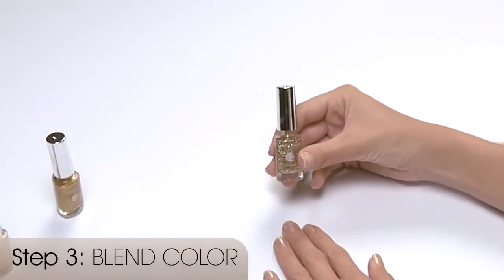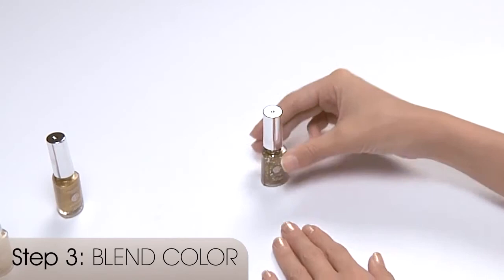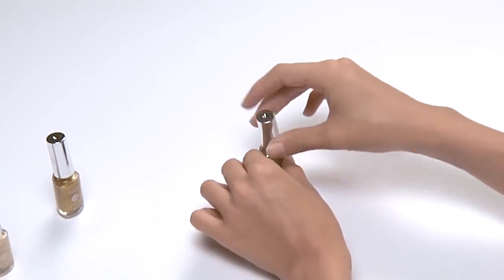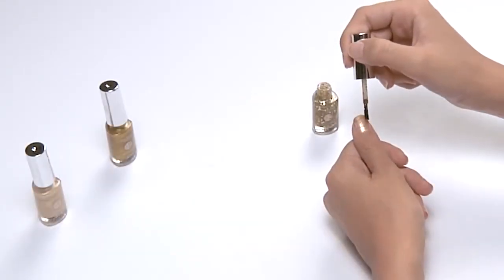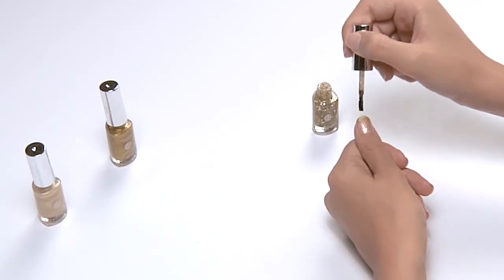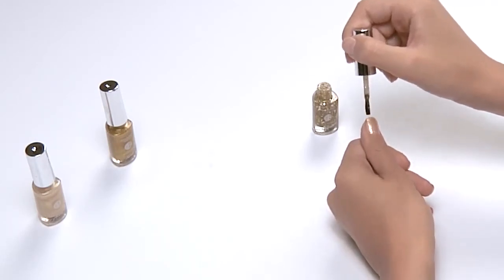Step 3, blend color. Apply one coat of Step 3 polish onto top half of your nail, completely covering Step 2 polish. Let dry.